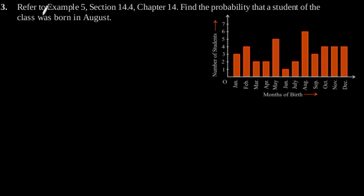So, by referring to example 5 of section 14.4, we will get this graph with total number of students is 40. And from the graph, we will get the information of students who are born in August.